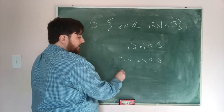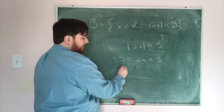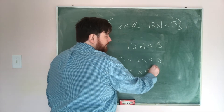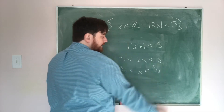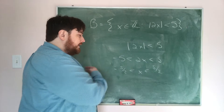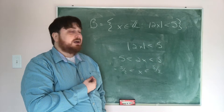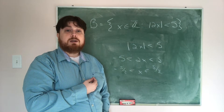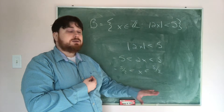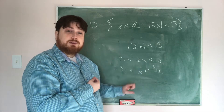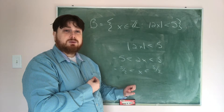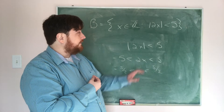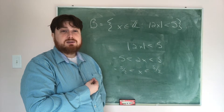If I divide by 2, I get negative 5 halves is less than x, which is less than 5 halves — that is, negative 2.5 and 2.5. Now we need to be careful here, because we don't just want all real numbers between negative 5 halves and 5 halves. We only want the integers.